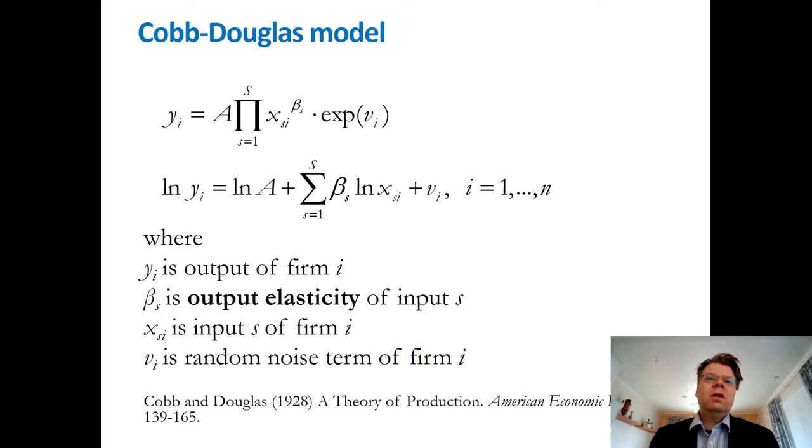The second equation is then, although it's not linear in terms of X and Y variables, it's actually linear in terms of unknown parameters, these betas and log of A and the error term. Therefore, this Cobb-Douglas model can be estimated by just the linear regression.